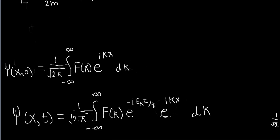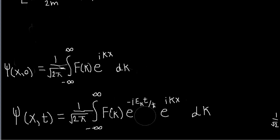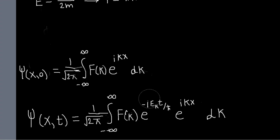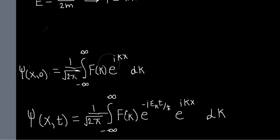If you do that, then your problem is solved, because this gives you ψ as a function of time in integral form — and presumably you can do the integral. The problem you usually deal with is not that you can't do this, but that you normally don't have the expansion in terms of the right basis. Normally you just have ψ(x), your initial wave function, but you don't know how to expand it in terms of the momentum eigenstates.